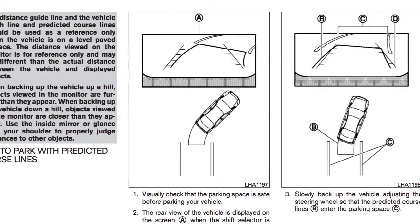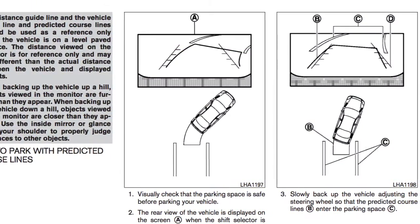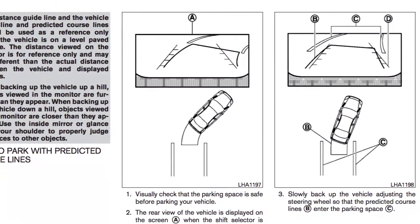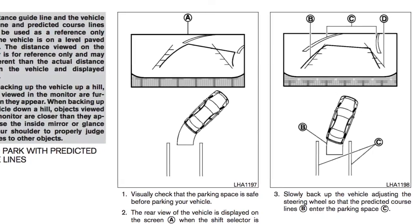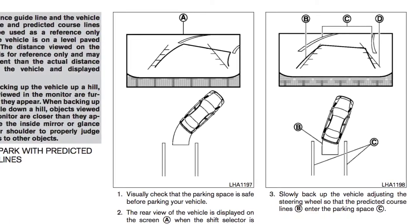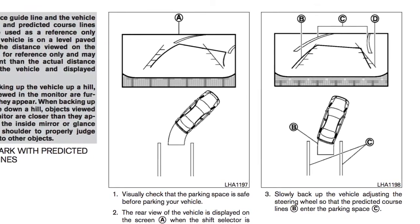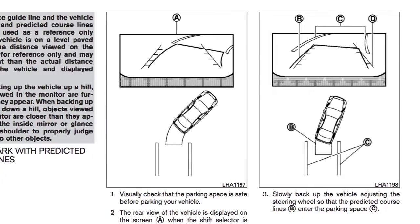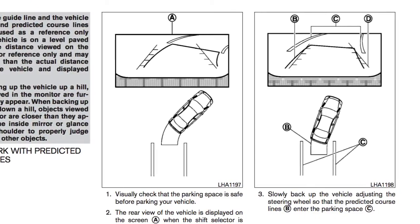When the steering wheel is turned, predictive course lines are also displayed on the screen. These lines show the approximate path the vehicle will take. The predictive course lines move in conjunction with how far the steering wheel is turned.